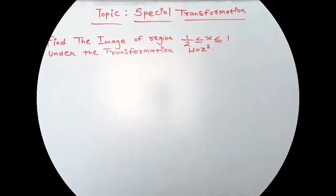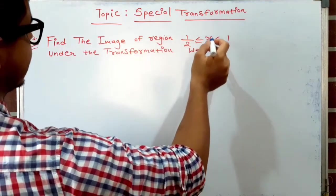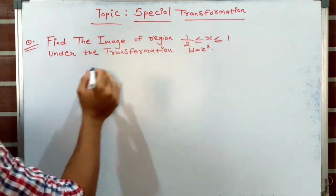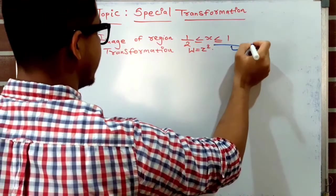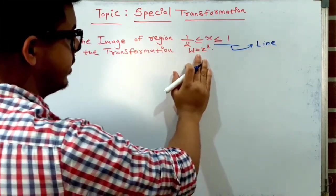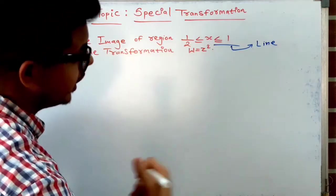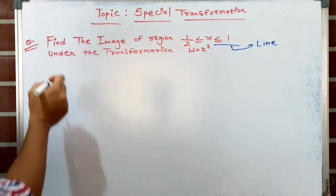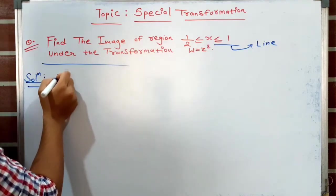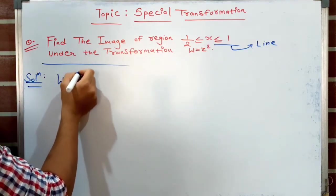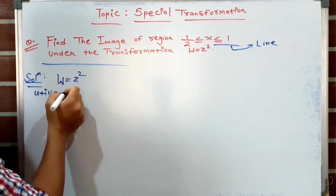The first question: find the image of the region 1/2 ≤ x ≤ 1 under the transformation w = z². The equation of a line is given, so using this transformation we can convert this line in the z-plane into a parabola in the w-plane. For the solution: given w = z², we write w = u + iv and z = x + iy, so u + iv = (x + iy)².